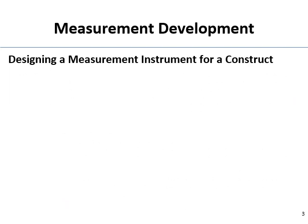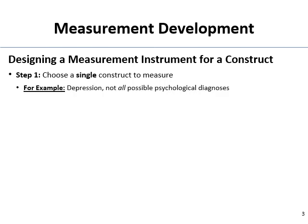Moving on — let's talk about how you design a measurement instrument to measure some construct. Step one is to choose your construct. Generally, for this class assignment, pick one simple construct — not something crazy like love. Something like depression would work, though there are plenty of good measures already. You wouldn't want to try to make a questionnaire that measures all psychological diagnoses — that's too broad. Pick something simple.